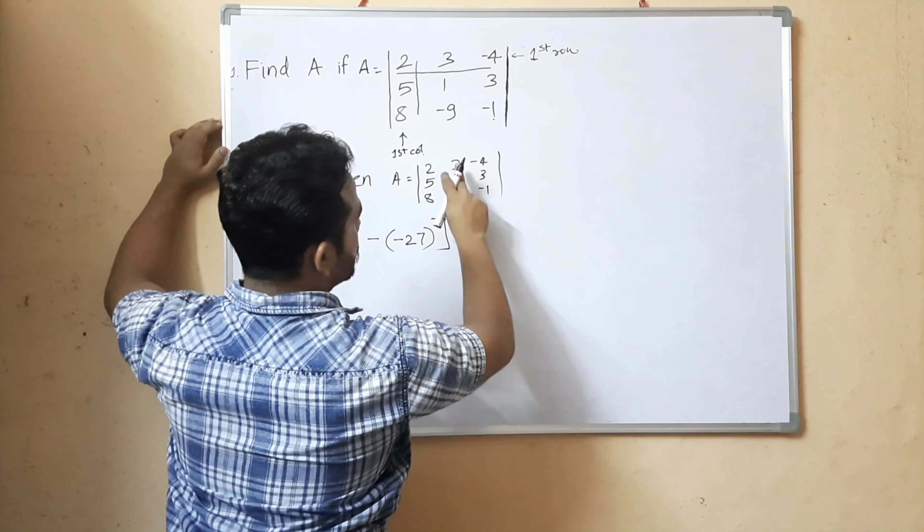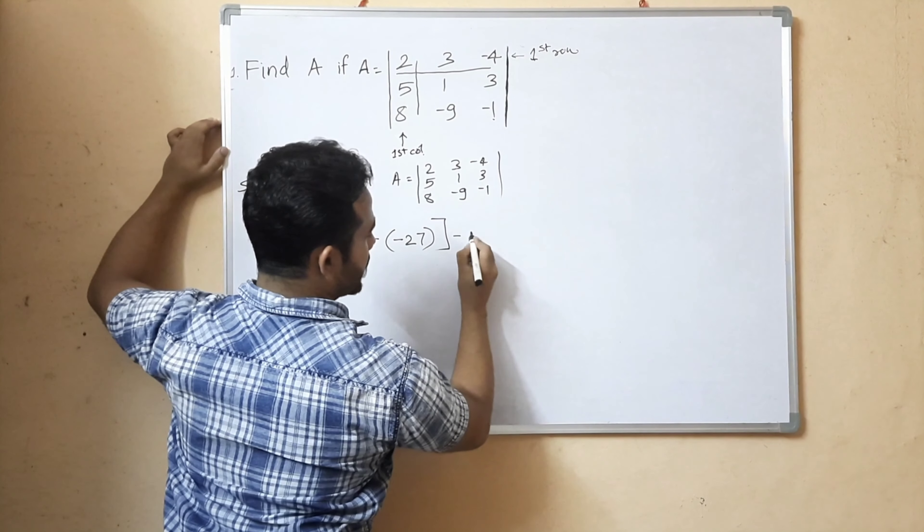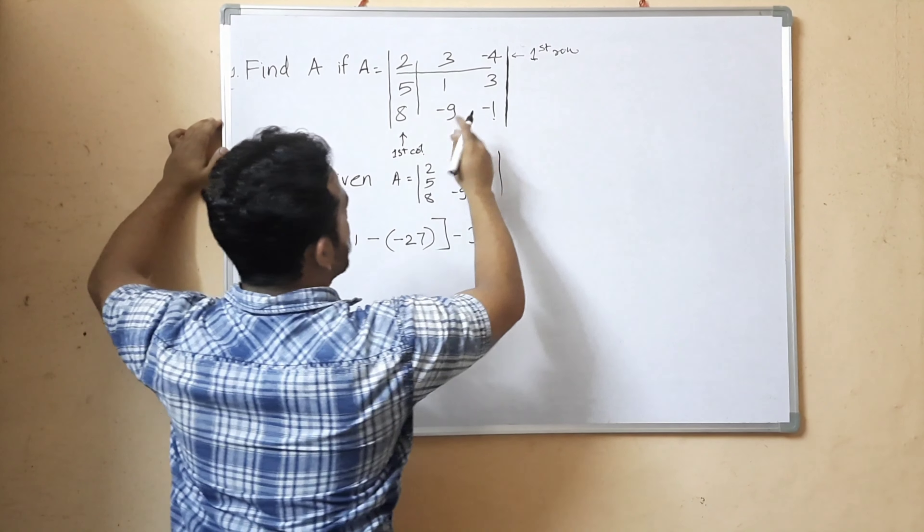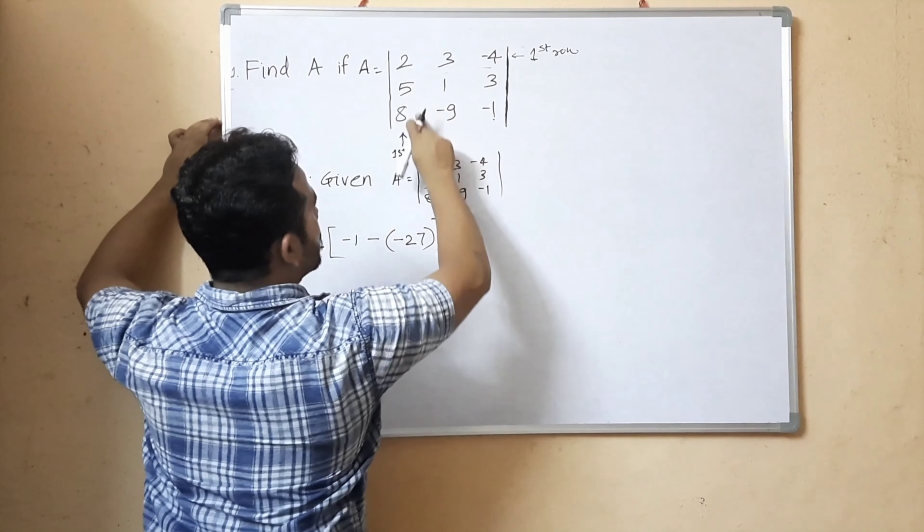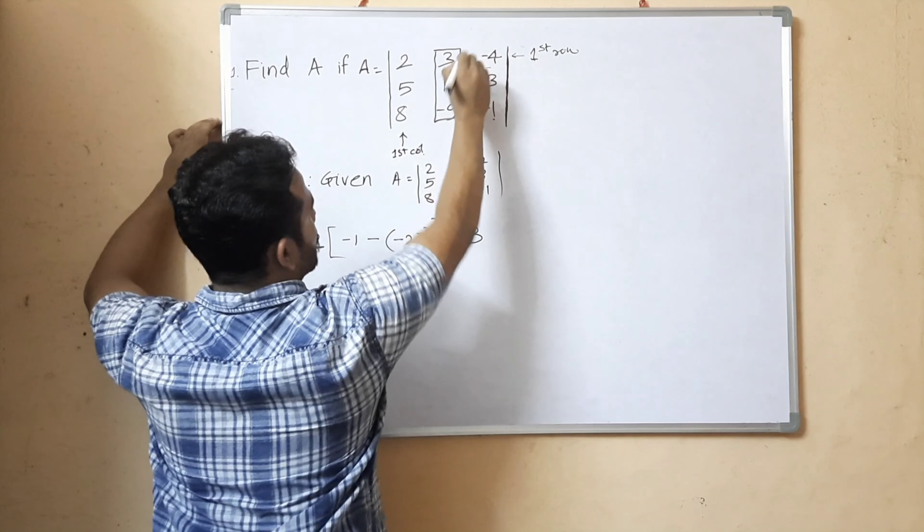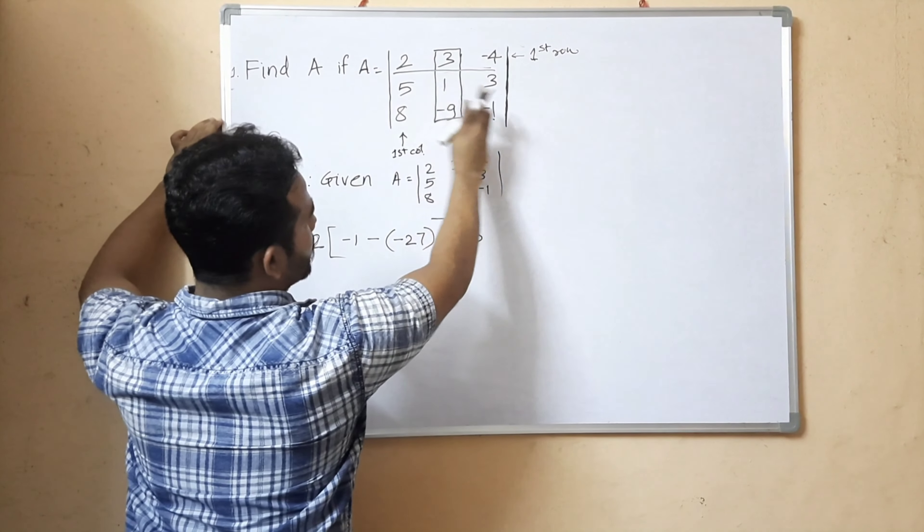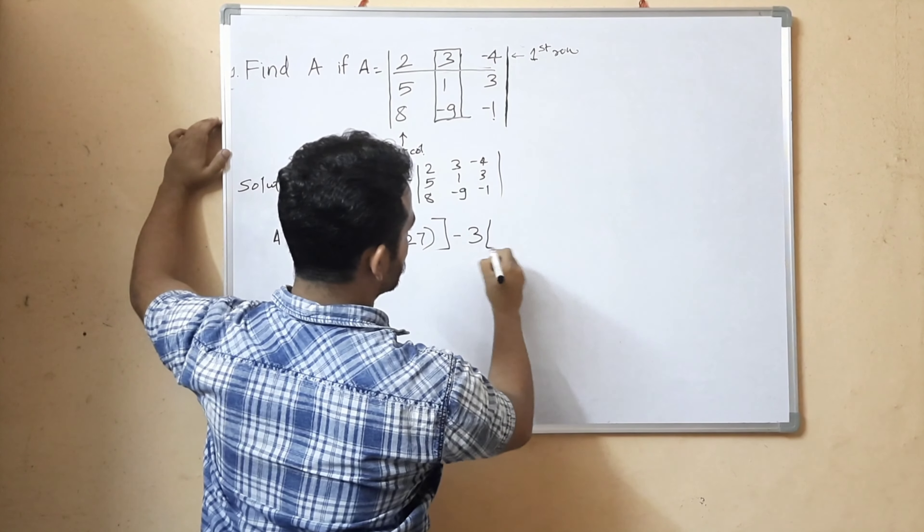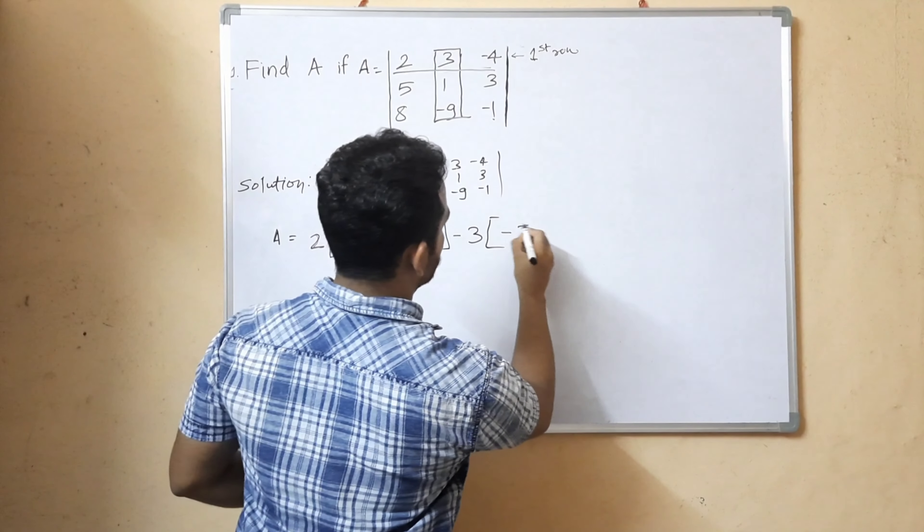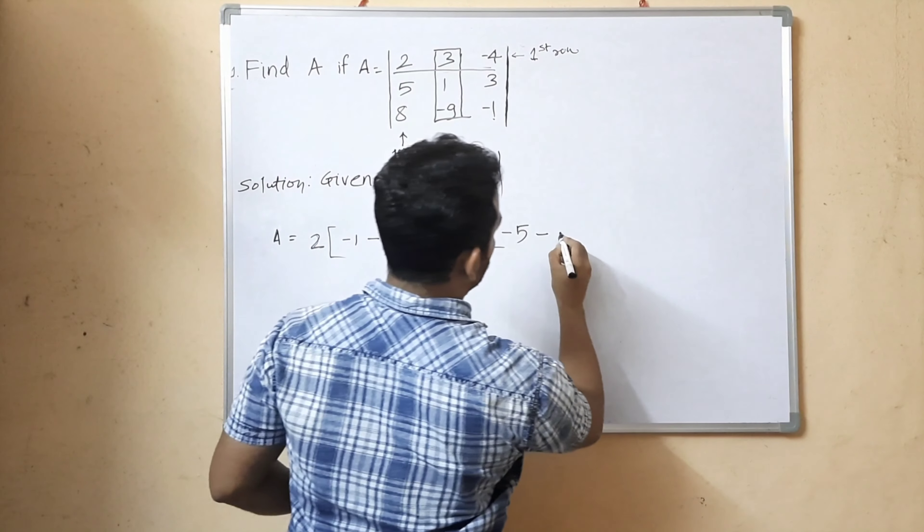The second element is 3 from the first row. We get 3 times the determinant of 5, 3, 8, minus 9, minus 1. That's 5 times minus 1 minus 8 times 3, which equals minus 5 minus 24.